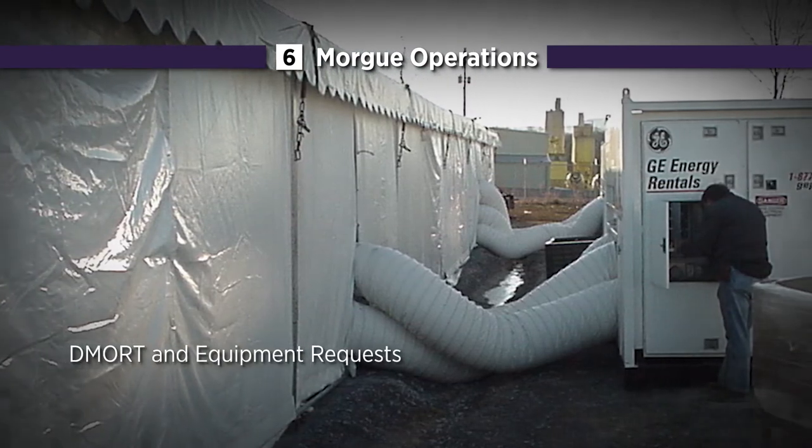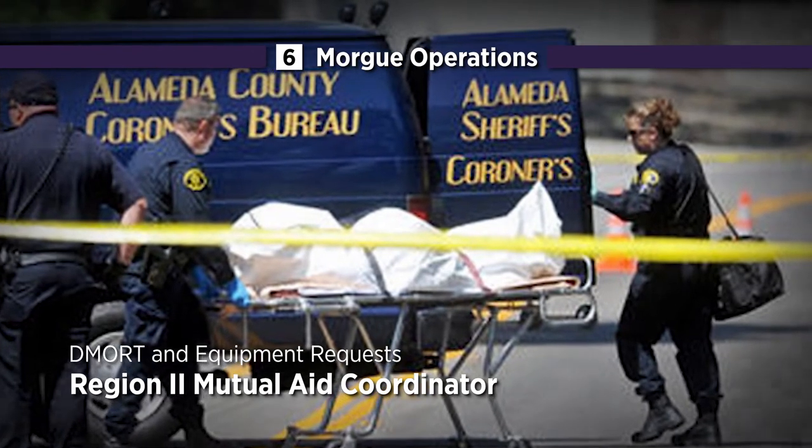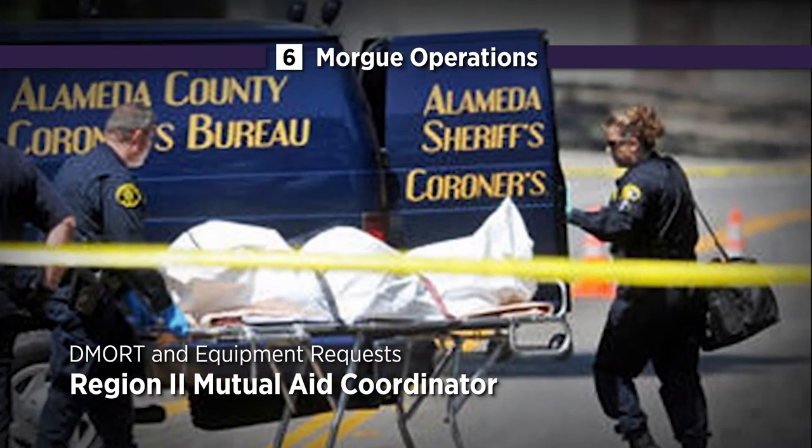You will likely request DMORT at the onset of a mass fatality incident. DMORT and equipment must be requested through the Region 2 Mutual Aid Coordinator in Alameda County to establish a mass fatality incident morgue. We'd have to identify a facility or perhaps portable tents. We would request the Disaster Mortuary Operational Teams, DMORT, from the federal government. These teams can come out and assist the local coroner in identifying the victims.